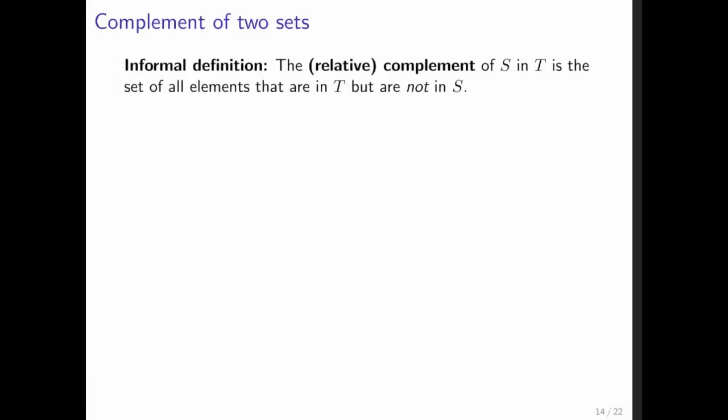Now we get to the complement of two sets. And here what they're saying is we have a set T and a set S. And what we want is all of the elements that are in T but not in S. It's denoted by this backslash.